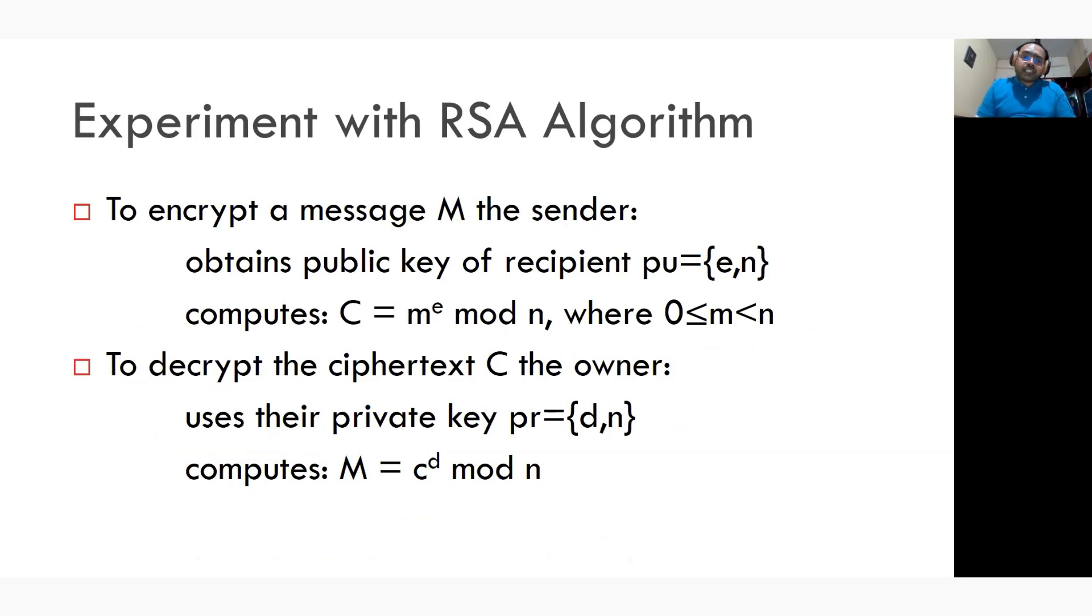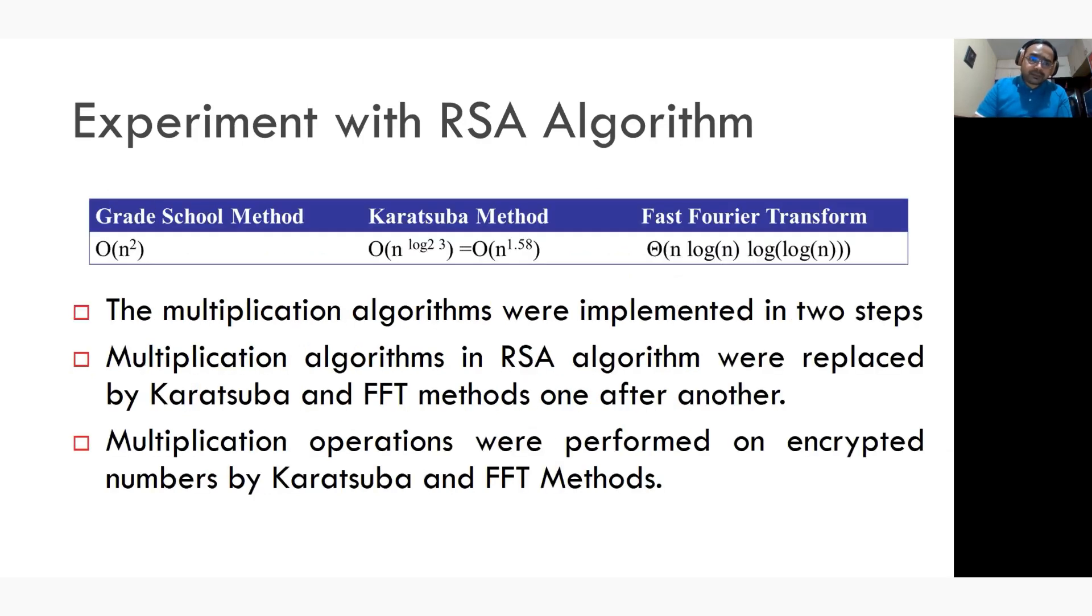Now this is how ciphertext and plaintext are calculated. Ciphertext is calculated using the formula m raised to e mod n. If you have this ciphertext, you can convert it into plaintext by using c raised to d mod n formula. This slide shows how we have done the experimentation and it also shows the time complexity of grade school method, Karatsuba and fast Fourier transform method.